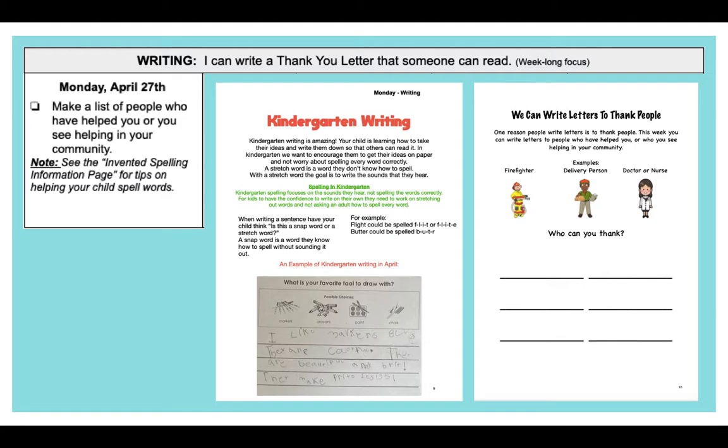So if they're writing the word flight, it could be spelled F-L-I-T. Flight. Or they might want to add a silent E at the end. We know that's not the right way to spell it, but in kindergarten we just want them to stretch it out and do the best that they can.